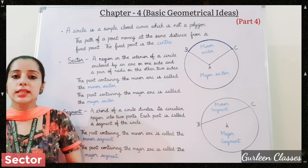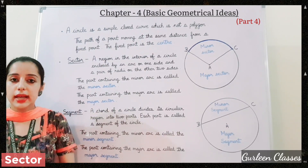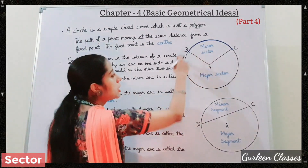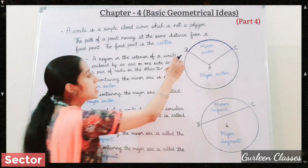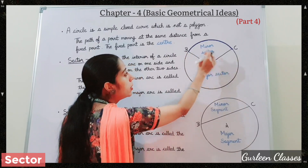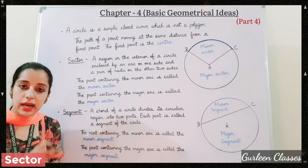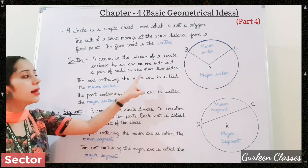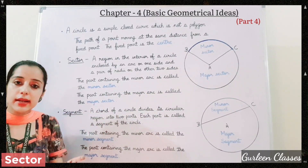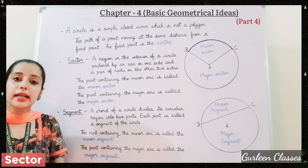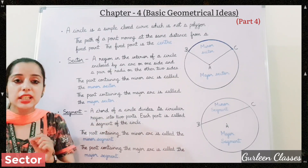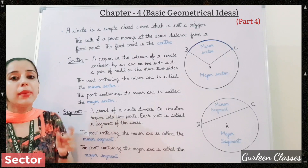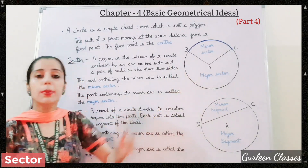Next, sector. A region in the interior of a circle enclosed by an arc on one side and a pair of radii on the other two sides is called a sector of the circle. This region inside the circle is enclosed by an arc and a pair of two radii. The part containing the minor arc — which occupies less area — is called the minor sector. And the part containing the major arc — which occupies more area — is called the major sector.